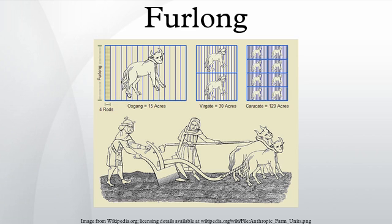A furlong is a measure of distance in imperial units and U.S. customary units equal to one-eighth of a mile, equivalent to 660 feet, 220 yards, 40 rods, or 10 chains. Using the international definition of the inch as exactly 25.4 millimeters, one furlong is 201.168 meters.